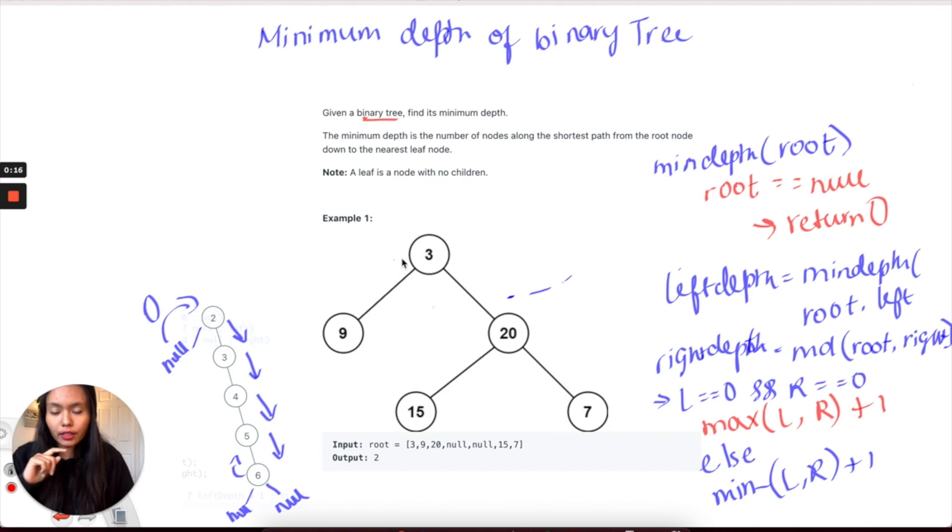If we take this example here, we can see that the minimum depth is 2, which is what we're supposed to return. When we go to the left side, we count this node as 1 and then this node as 1, so that's how we get 2. If you compare it to the other side, there's three nodes here - 1, 2, 3. We don't want to return this side; we want to return the side with the count of the minimum nodes in that tree.